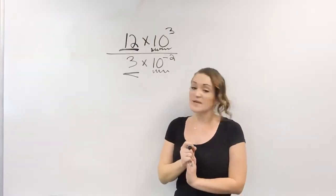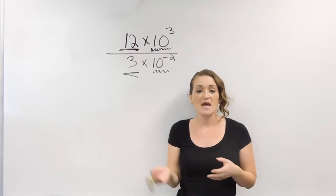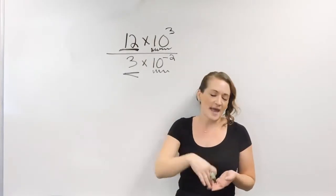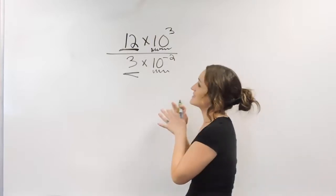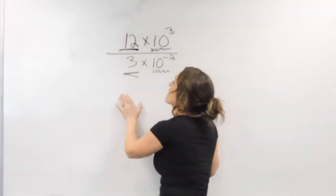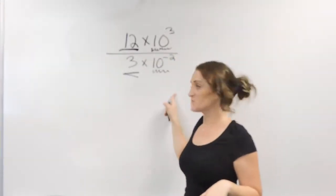When it comes to most things, when it comes to math, we can only do calculations with like things. A number times a number, an x times an x, and different things like that. And the same rule applies here. We can divide our numbers together, and then we can use the quotient rule to divide these exponents together.